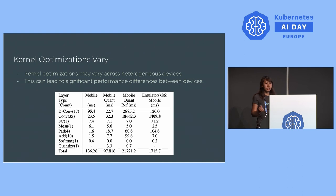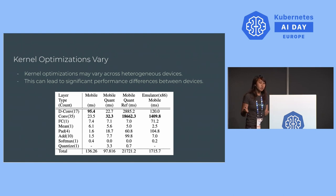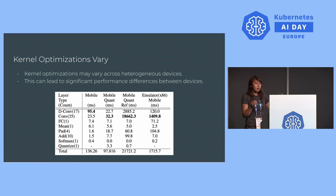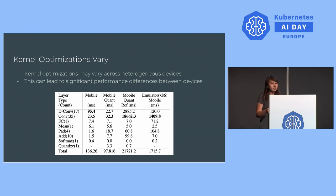The last issue is very unique to edge compute — kernel optimization differences. These devices have different hardware, and at the kernel level, they optimize different operations in different ways. This can lead to a huge latency difference between devices. Using ML X-Ray, you can create a graph comparing different models and how long each layer takes. Some results are surprising — the quantized pipeline is actually pretty slow in the second convolution step. ML X-Ray helps you identify that a particular layer is causing slowness, so you might need to deploy a special model to that particular hardware.